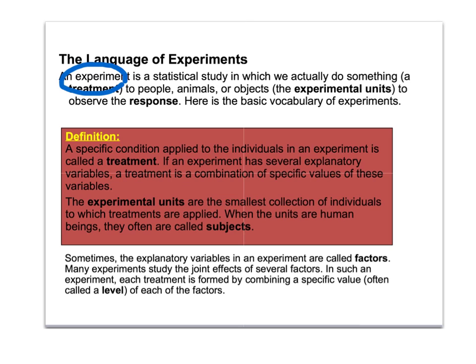A treatment is usually some sort of pill we're going to give them, or we're going to ask them to run up the stairs, or read a book, or whatever it is we're going to ask them to do. That's what we call a treatment. And who's doing that, whether it's people or animals or objects, those are the experimental units.